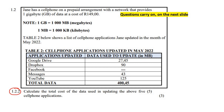The next question says: calculate the total cost of the data used in updating the above five cell phone applications. So we need to know the previous answer, which was 115 megabytes. But if you're ever nervous in a test because you think you maybe got that one wrong, remember that they'll mark with your original answer. Because if you got the previous question wrong, you're also going to get this one wrong — but they know that. So they'll take your previous answer and still see what you would have done, and they'll still give you marks. They mark with your mistake. So don't give up on all the others just because you couldn't do the first question.